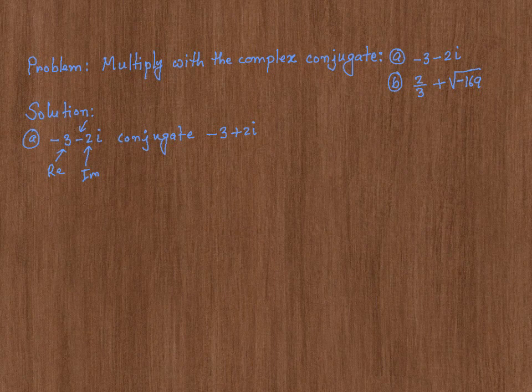This is the rule that applies all the time: when you are trying to find the conjugate of a complex number, just change the sign in front of the imaginary part of the complex number. Now we need to multiply it out — negative 3 minus 2i times negative 3 plus 2i.